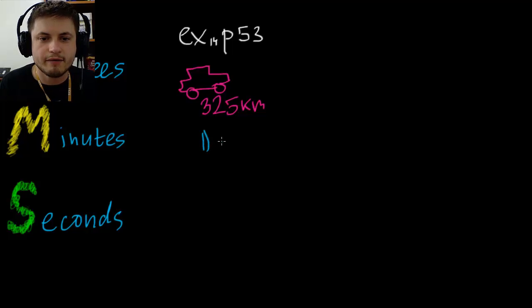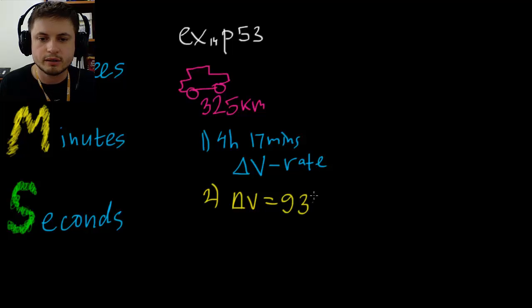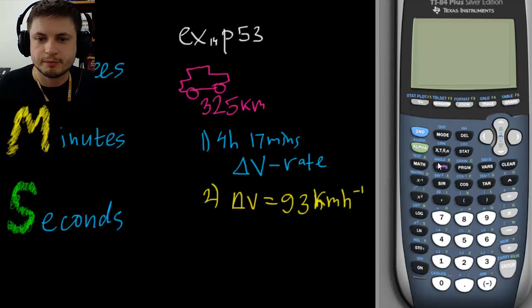Question one is find average speed if the trip takes 4 hours and 17 minutes. So we're looking for average speed, delta V, which is a type of rate. Question two is asking the opposite: how long did it take to get from A to B if the average speed was 93 kilometers per hour? It's very common on a test to see something like this.